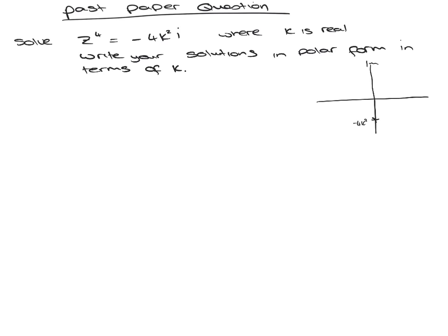So what that means is r, which is the distance from the origin, is 4k squared, and theta, which is your argument, which is from the positive side of the x-axis, theta is going to be 3 pi over 2, because each quadrant is pi by 2.